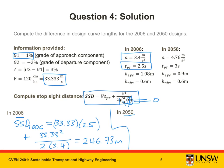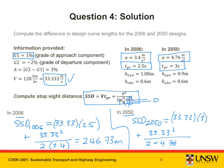And for 2050, SSD is equal to V, 33.33 times t_PR, which is 3 seconds, plus V squared, 33.33 squared over 2 times a, which is 4.76. Putting this into my calculator, I get 216.71 meters.